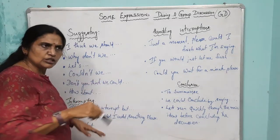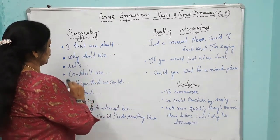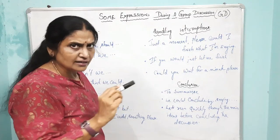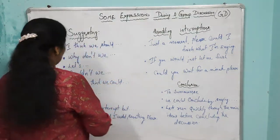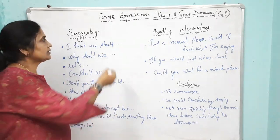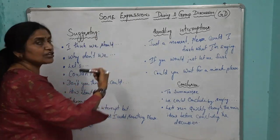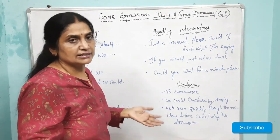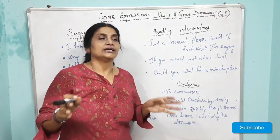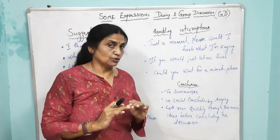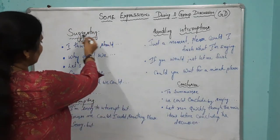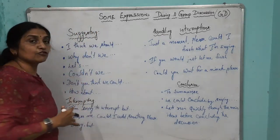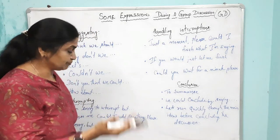You can also say: 'Couldn't we do like this?' or 'Don't you think we could?' or 'How about doing like this?' These are the formal expressions for making suggestions. You just cannot stand up and say 'okay listen, this is my suggestion.' You have to formally express these phrases before suggesting something.